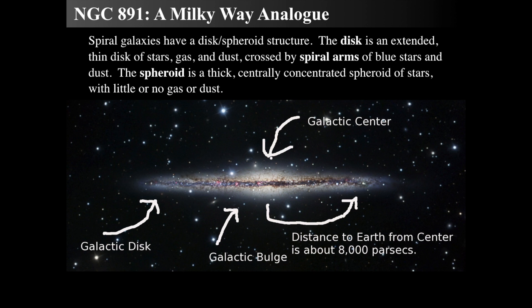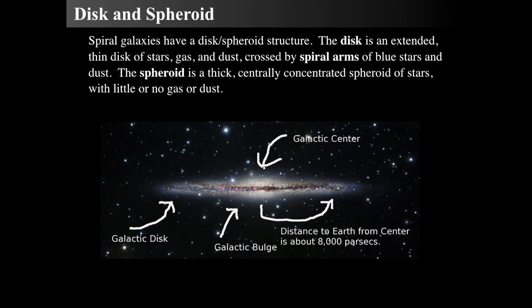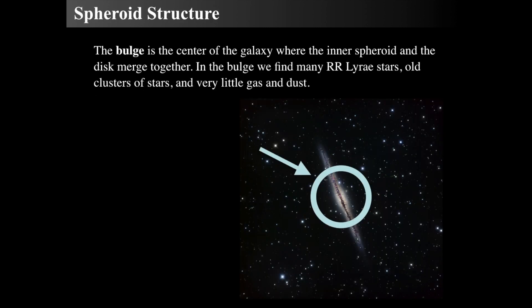The spheroid is thick and central, with a bunch of stars but almost no gas and dust — all the gas and dust is way out in the disk. Looking specifically at the bulge, you find a lot of RR Lyrae-type stars, because those are heavily evolved, older stars — G-type stars finally evolving into giants. There are also old clusters such as globular clusters, but almost no gas and dust in the bulge.